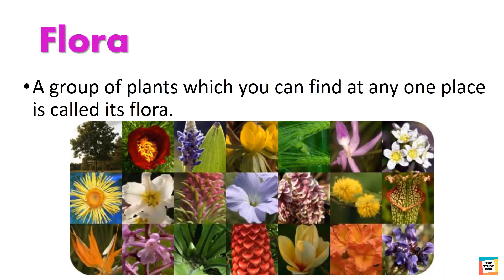A group of plants which you can find at any one place is called its flora. For example, you can find a rose plant and a mango tree in your garden. So they both are the flora of your garden.